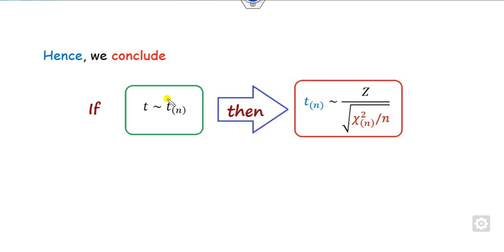So if any variable follows the T statistic with n degrees of freedom, then you can write the relation as z divided by the square root of chi-square over n, giving the relation between T and chi-square.